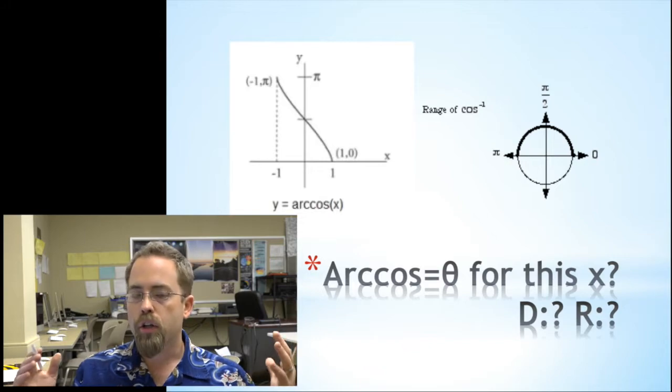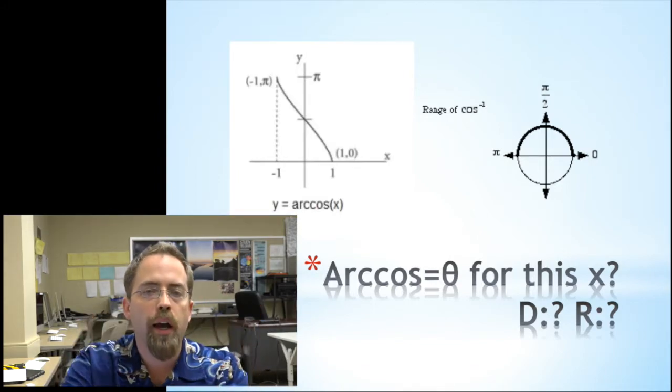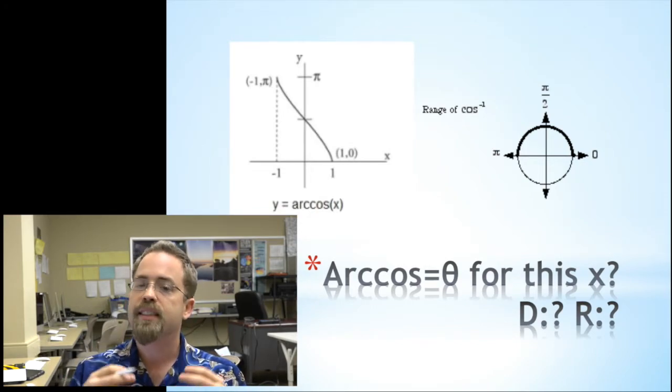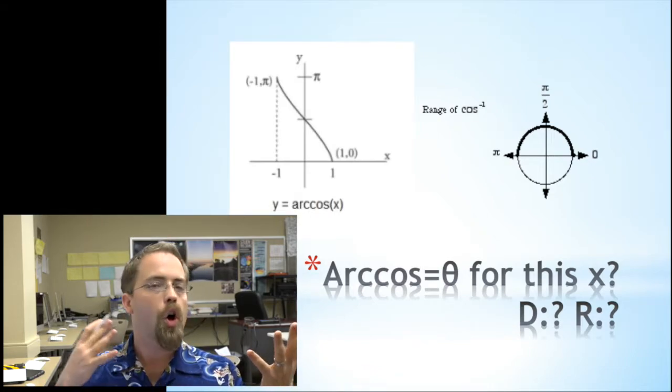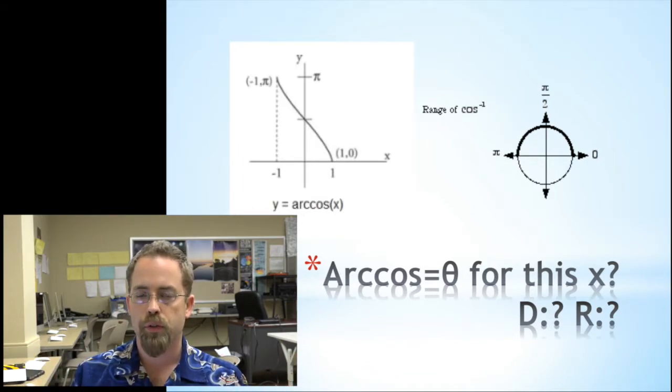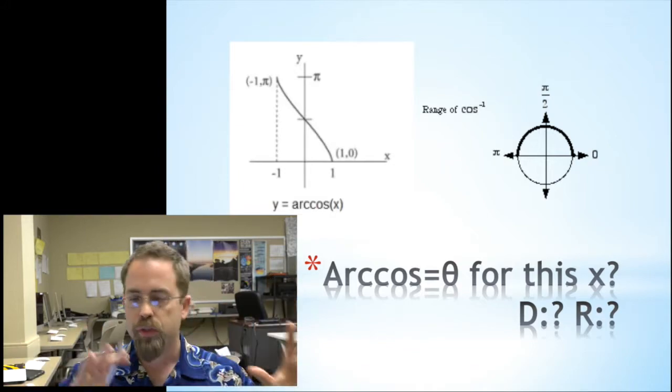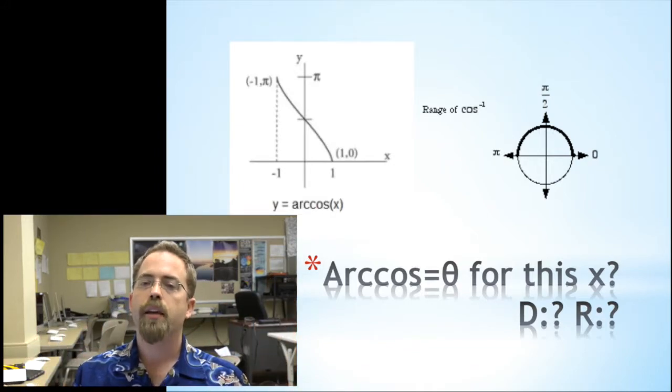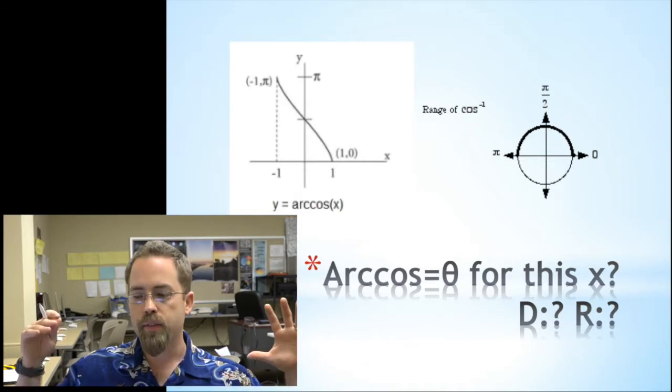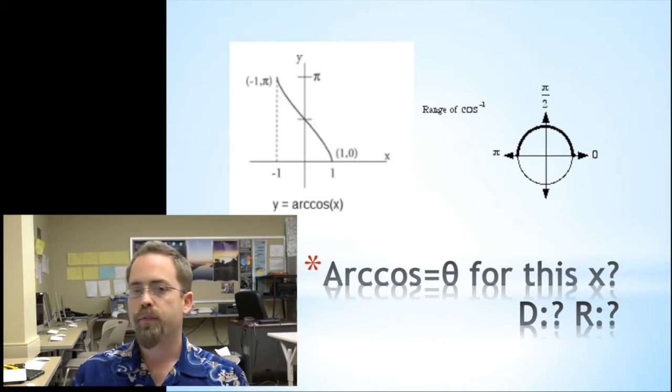Next up, we've got arc cosine. Now inverse cosine is going to work first and second. Why? Inverse cosine is about X values on the unit circle. On the unit circle, first and second does cover all the positives and all the negatives. The domain is negative one to one and the range is zero to pi. This is a nice, continuous, pretty slice of the cosine function that gets everything flipped on its side.